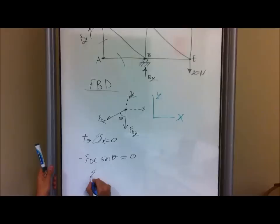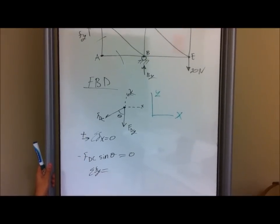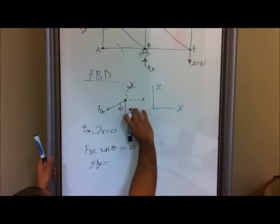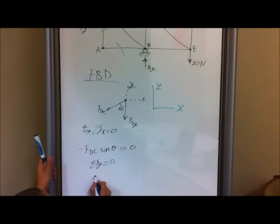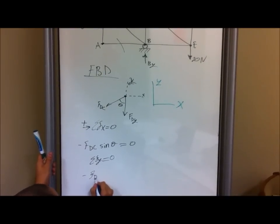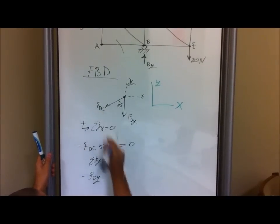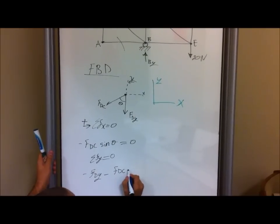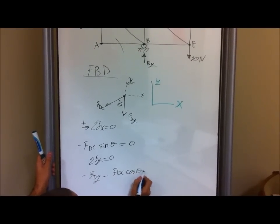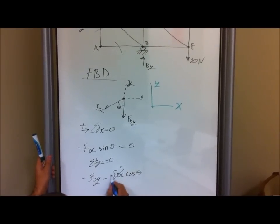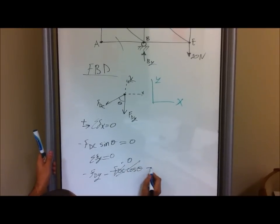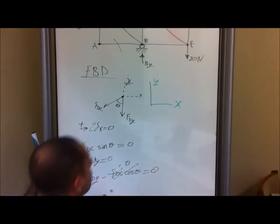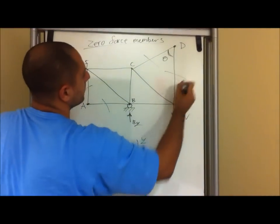Now let's do the y direction. You notice that in the y direction we have negative F of Dy, minus F of DC cosine theta. However, we know that F of DC is zero, so this whole thing cancels out, equals zero. Therefore, our force Dy is also a zero force member.